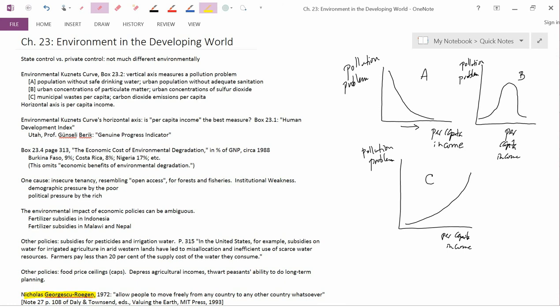Georgescu-Roegen was born in Romania. He immigrated to the United States just before World War II, was taught for a while at Harvard. He earned his PhD, I believe, in the 1920s. So he was already a professor before he came to the U.S.